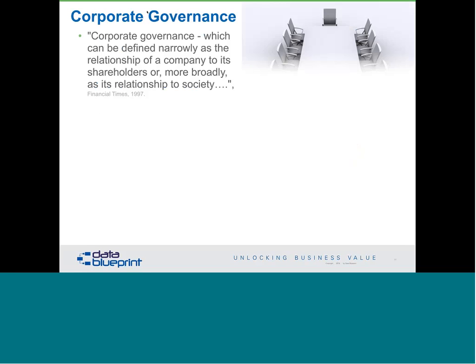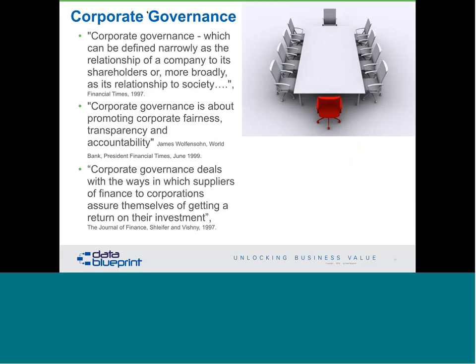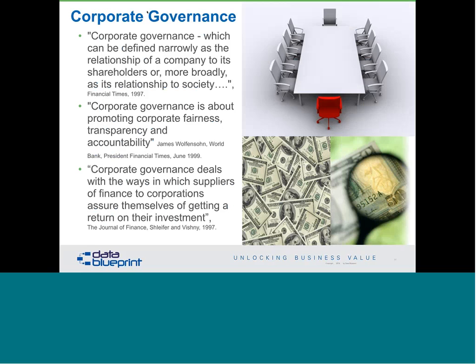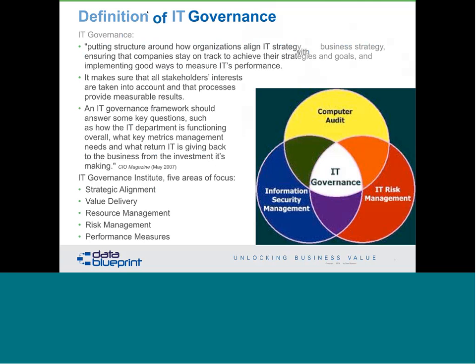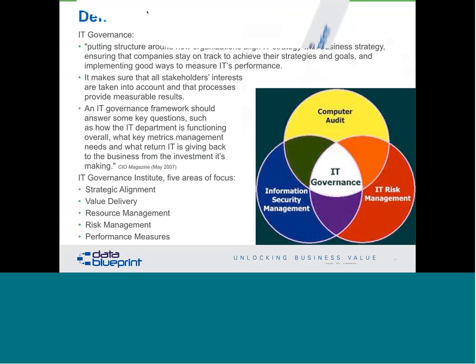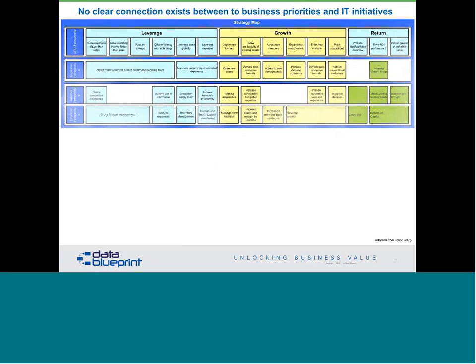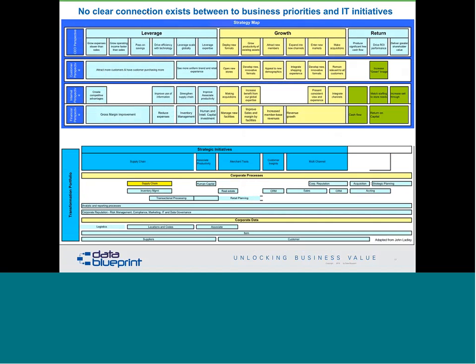Corporate governance is considered good form — having people responsible for certain aspects of how things are done. Now we get into IT governance as well, with areas like computer auditing, information security management, and risk management. My colleague John Ladley put together a wonderful illustration showing that many times there is a gap between the business priorities and what's going on in IT initiatives, because it's very difficult for large organizations to take an organizational strategy and make it work at the IT project level.